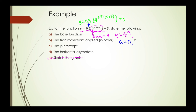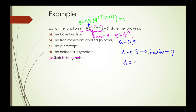Since a is 0.5, that means we are vertically compressing by a factor of 0.5. Our k variable is 0.5, and this means that we are horizontally stretching by a factor of 2, because 2 is the reciprocal. Our d value is going to be negative 2, which means that we are moving the graph 2 units to the left. And finally, our c value is 3, which means that we move our graph 3 units up.